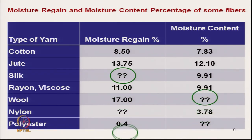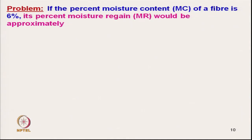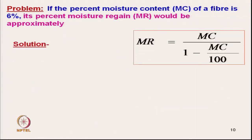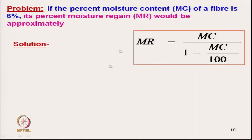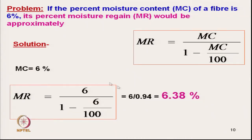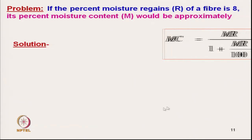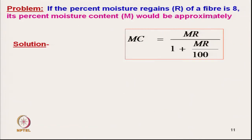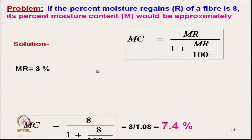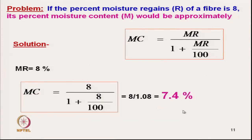Simple numerical: if the moisture content of a fibre is 6%, its percentage moisture regain would be — using the formula — approximately 6.38%. Similarly, if the percent moisture regain of a fibre is 8%, its moisture content would be 7.4%.